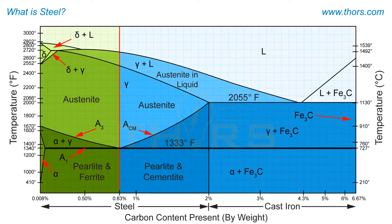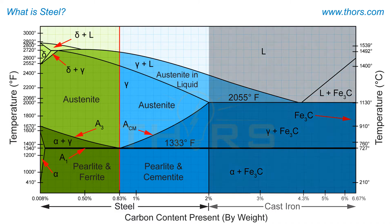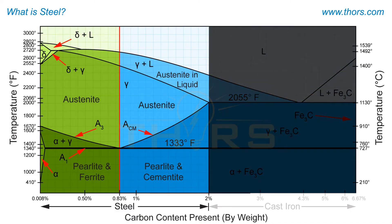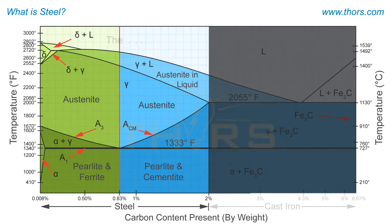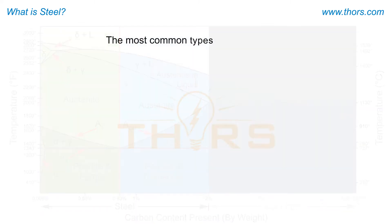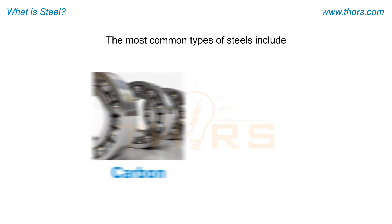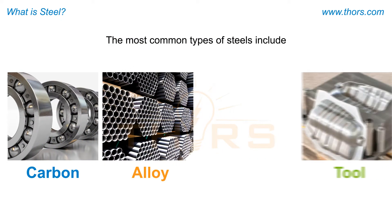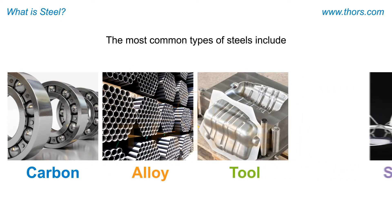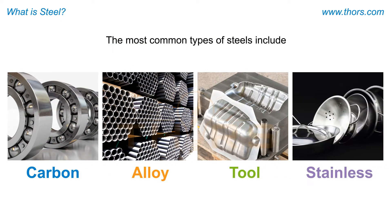Steel is defined as iron that contains a chemical composition of less than 2% carbon content. The most common types of steels include carbon steels, alloy steels, tool steels, and stainless steels.